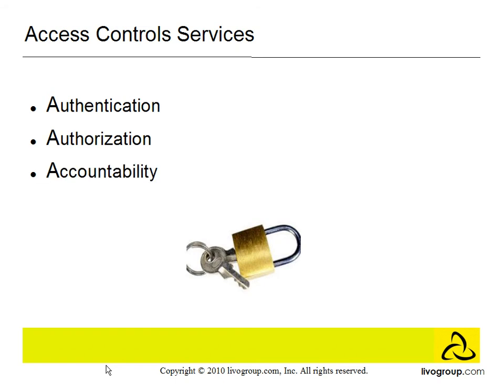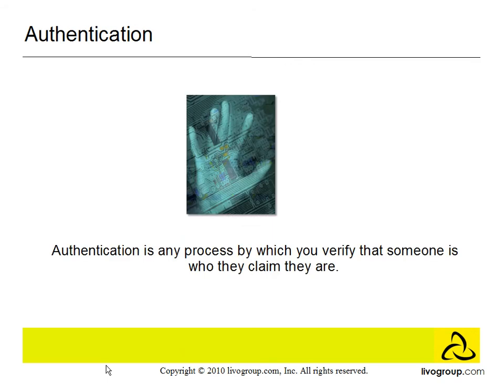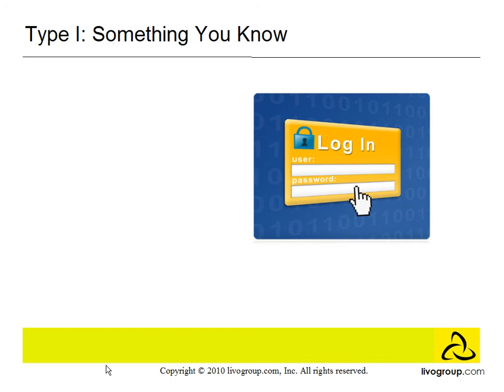Let's first discuss authentication. Authentication is any process by which you verify that someone is who they claim they are. Authentication determines who can log on to a system. Authenticators are commonly based on at least one of three factors. Type 1 is something you know — these are your username and passwords. This assumes that only the owner of the account knows the password needed to access the account. Type 1s are very simple and inexpensive, which is why they are the commonly implemented authenticators today.